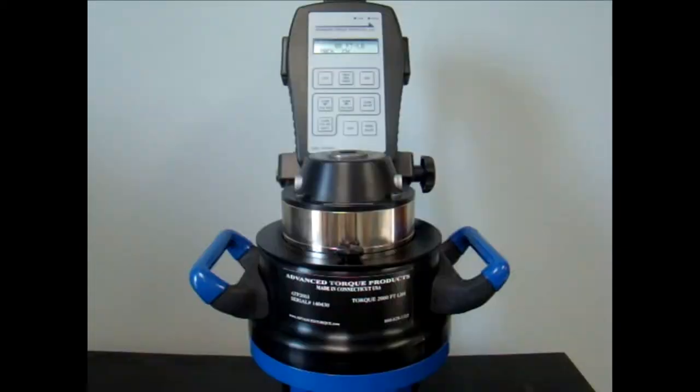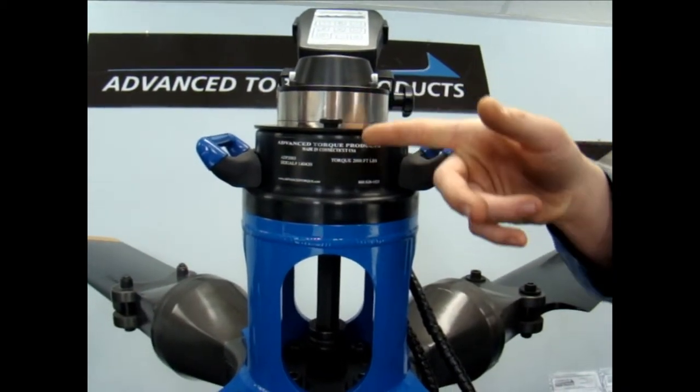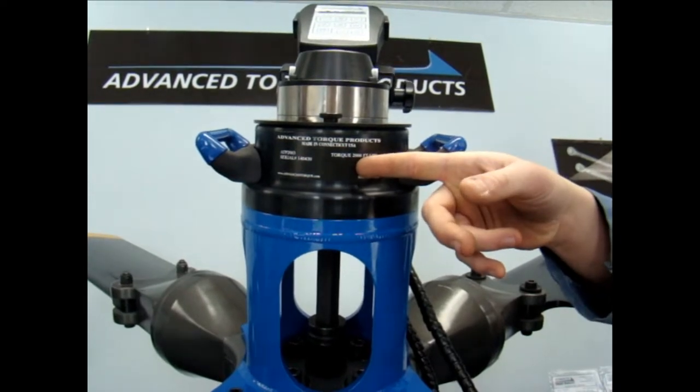There are three fundamental components to the ATP Digital Torque Multiplier: the anti-rotation cover, the multiplier, and the aluminum housing where the electronics are stored.